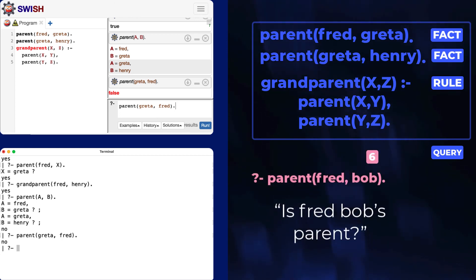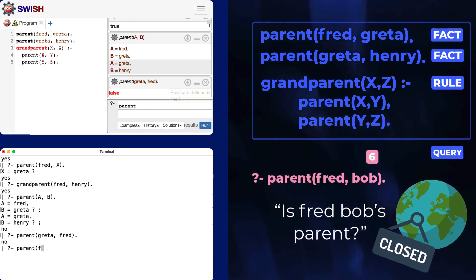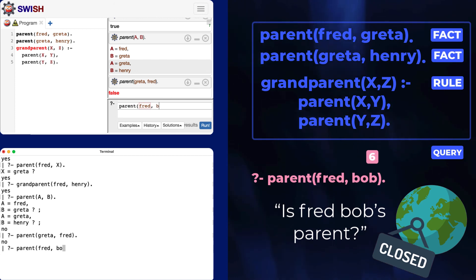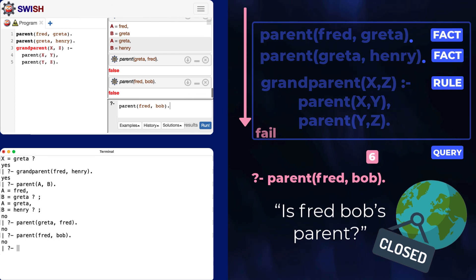Prologue also uses a closed world assumption. That means it never answers maybe, or I don't know, or I have no information about this person. It just fails.